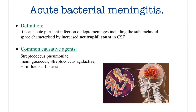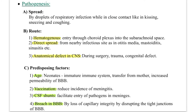Common causative agents are: Streptococcus pneumoniae, Meningococcus, Streptococcus agalactiae, H. influenzae, and Listeria. Now, the pathogenesis of bacterial meningitis: first, how it is spread — by droplets of respiratory infection during close contact, like kissing, sneezing, and coughing.